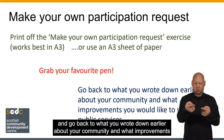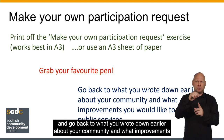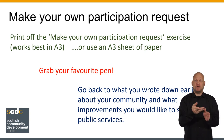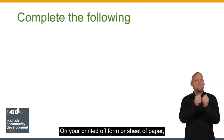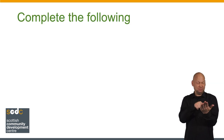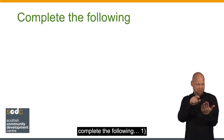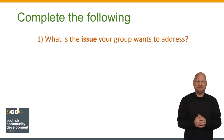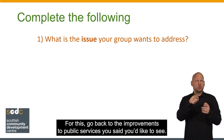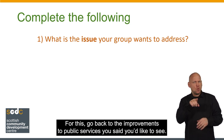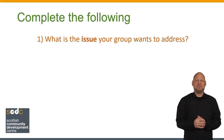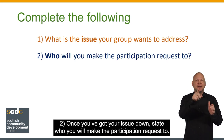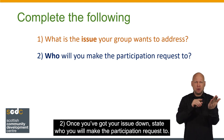Go back to what you wrote down earlier about your community and what improvements you would like to see to public services. On your printed off form or sheet of paper, complete the following. What is the issue your group wants to address? For this, go back to the improvements to public services you said you'd like to see. Once you've got your issue down, state who you will make the participation request to.